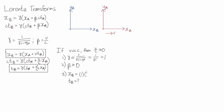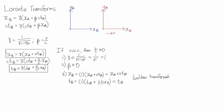So in this case, we have XB is approximately equal to XA plus VTA, and TB is approximately equal to TA. In other words, in the low velocity limit, we get the Galilean transformations, which makes sense. If we're traveling slowly — where slowly means just much less than the speed of light — we don't see relativistic effects, and we just live in a Galilean world.